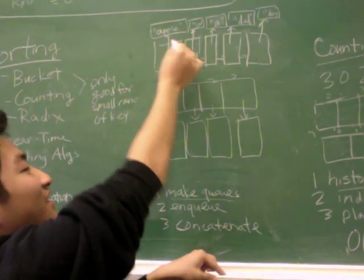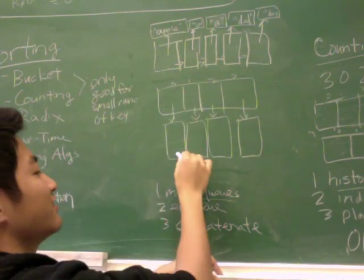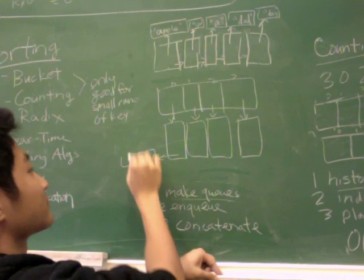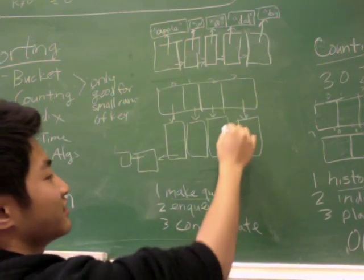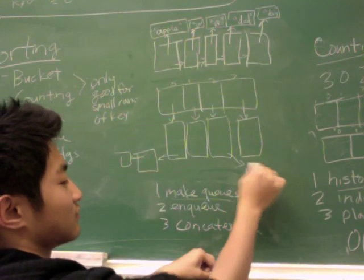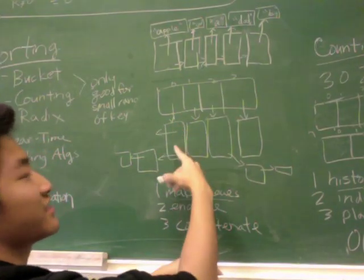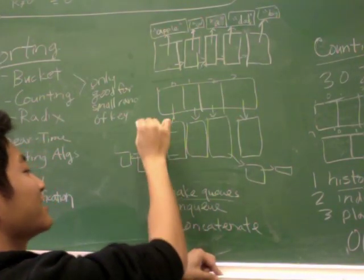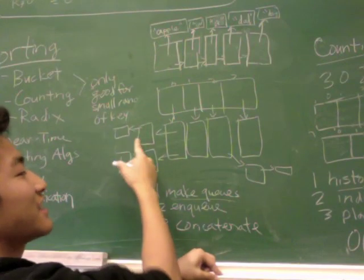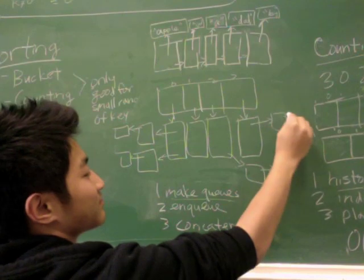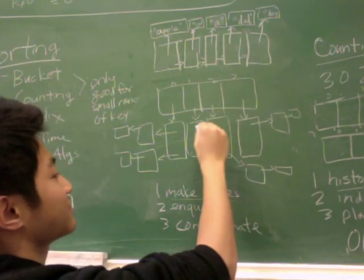First, apple goes in here. I'll enqueue this apple. Then car goes in here. Then A gets enqueued behind apple. You can see here that Bucket Sort is stable in this regard. Dad goes here, and by goes here.